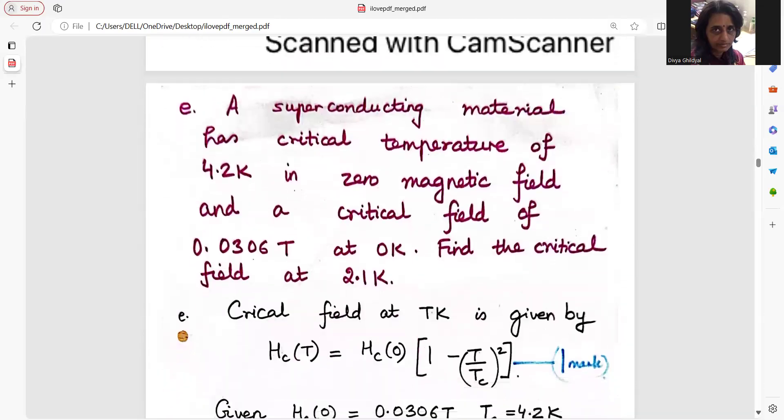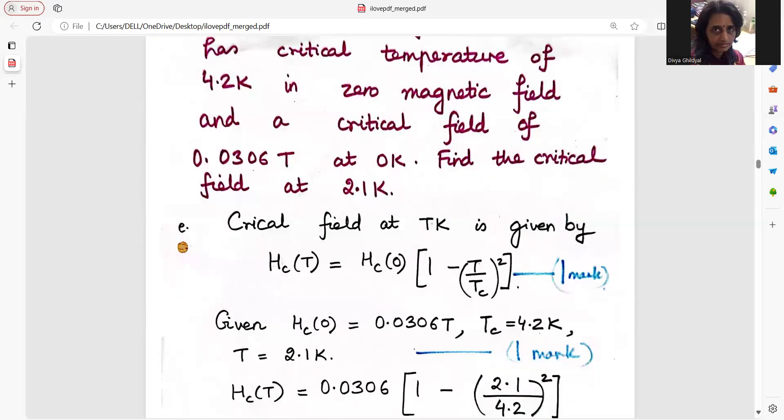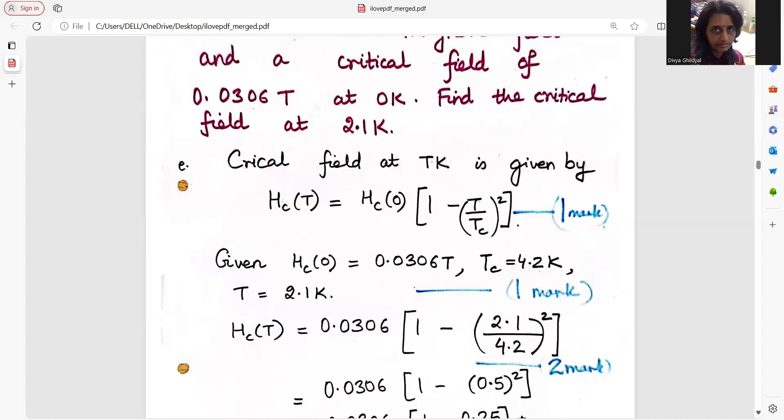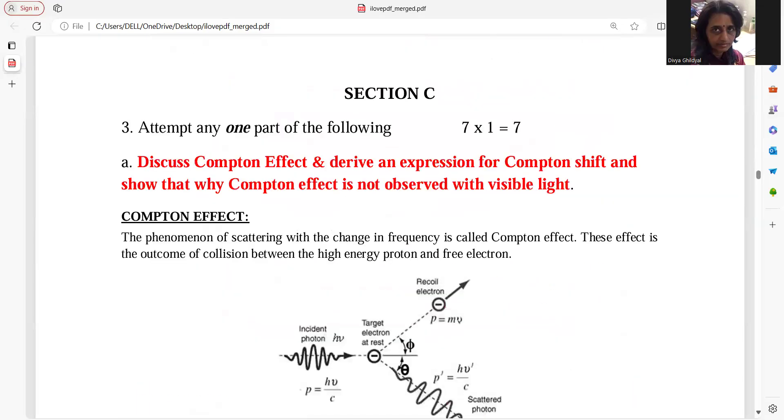Superconductor, this numerical was done and discussed a lot. Very famous formula: Hc is equal to Hc naught into one minus t by tc whole square. Put the numerical values here and step by step since it is a very direct formula based numerical you will be fetching more marks for showing these steps, step by step how you get the answer. We finish with the numericals. Now, let us come to Section C.